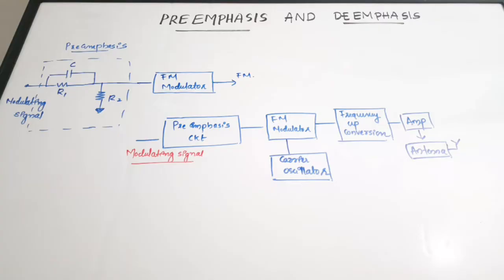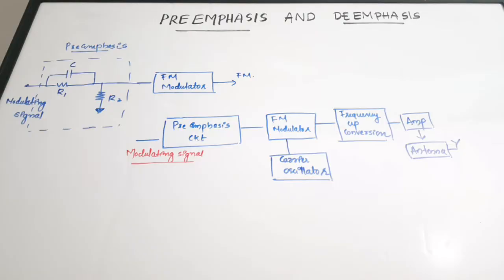In order to avoid this effect of noise, we perform an operation called pre-emphasis. In pre-emphasis, we increase the amplitude of modulating signals at higher frequencies. When the modulating signal frequency is higher, we increase the amplitude level of that higher frequency range. This allows us to increase the frequency deviation by boosting the amplitude of the modulating signal artificially.